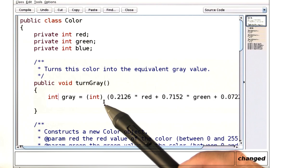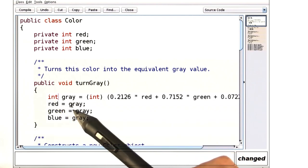That's where the cast comes in. Now, I have my gray value, and I stick that into red, green, and blue, and I'm done.